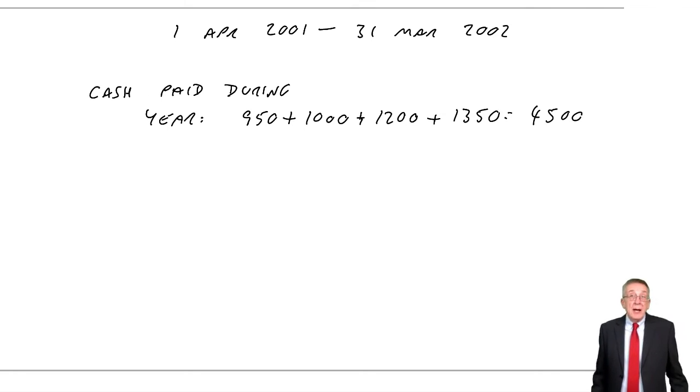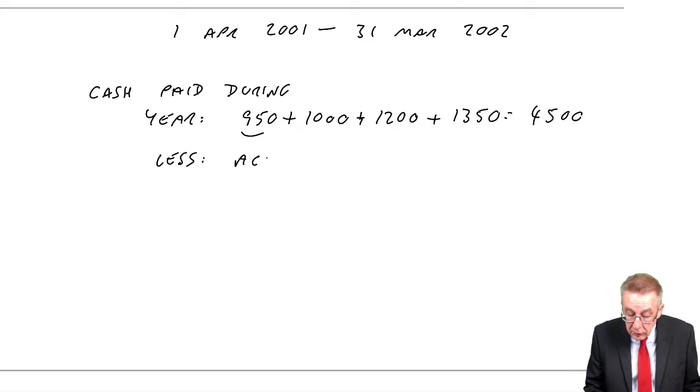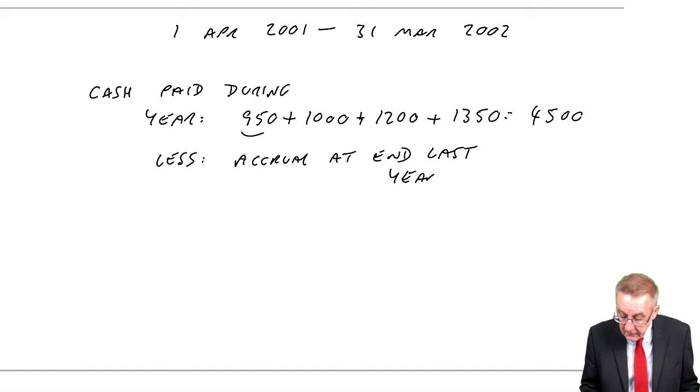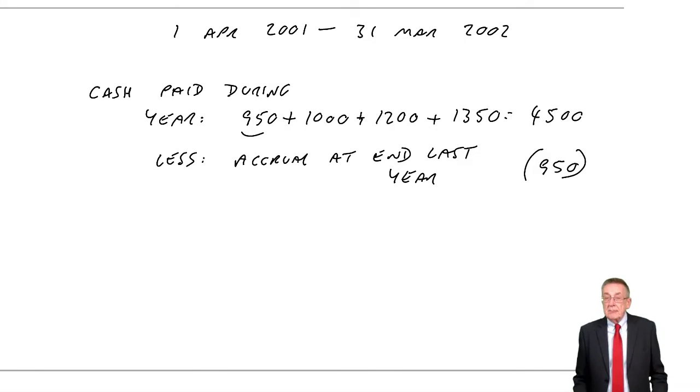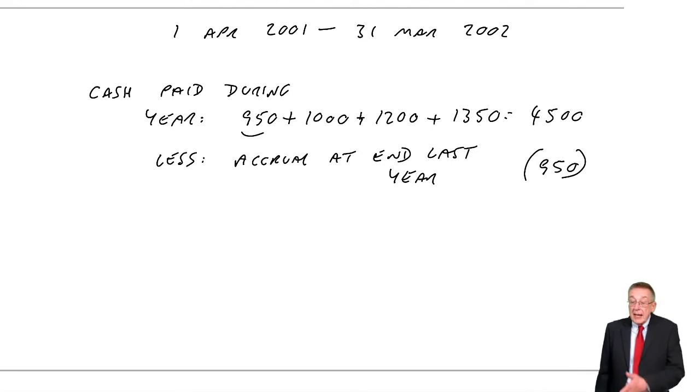October, another £1,200. January, another £1,350. So the total cash paid was £4,500. Why is that not the expense for the year? Well, for two reasons. First of all, at the end of last year, we were owing money. And so part of what we paid this year was, in fact, what was owing from last year. That first £950, remember? We paid it this year, but it's not a cost for this year. It was last year's cost.